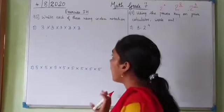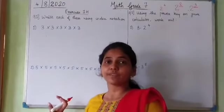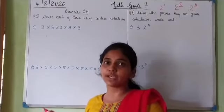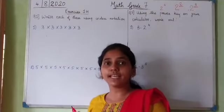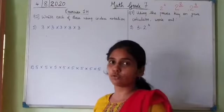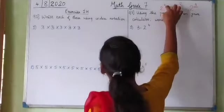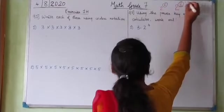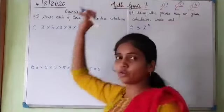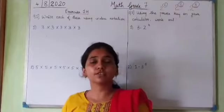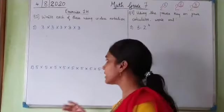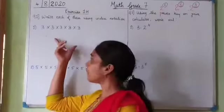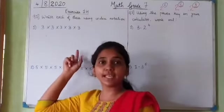We will see how to write numbers which are multiplied to themselves a number of times in index notation. The number raised to some power — the number written up above — is called the index.